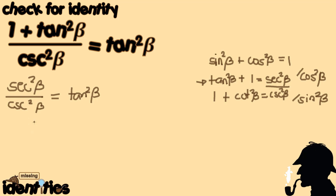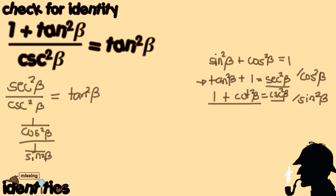Secant squared is the reciprocal of cosine squared. So we can write 1 over cosine squared beta for the numerator, over our denominator cosecant squared beta, which is equal to 1 over sine squared beta. Note that you see cosine squared beta here, but don't substitute its value for your denominator because you cannot simplify it further — it is already a binomial.